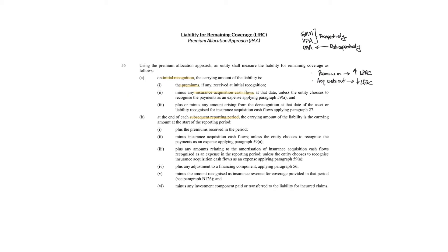Now let's go to the subsequent reporting periods. Under subsequent reporting periods, just like initial recognition, we increase the liability for remaining coverage for any premiums received in the period and minus any insurance acquisition cash flows paid during that reporting period. What we need to pay attention to in this example is the amortization of these costs and also the amount recognized as insurance revenue. There are other adjustments such as financing effects and investment components, but we won't cover those in this video.